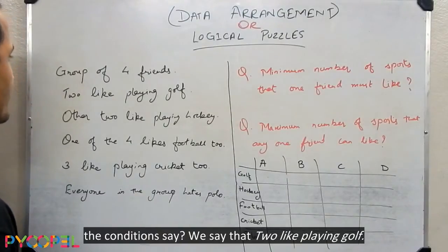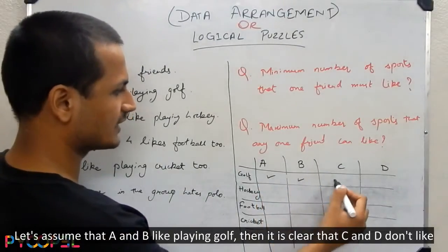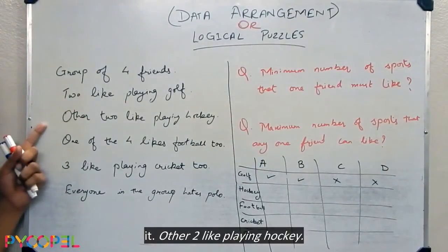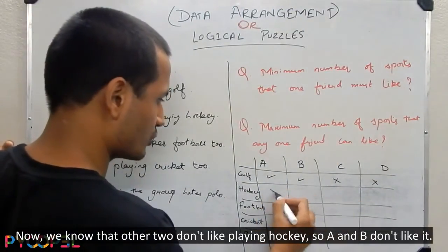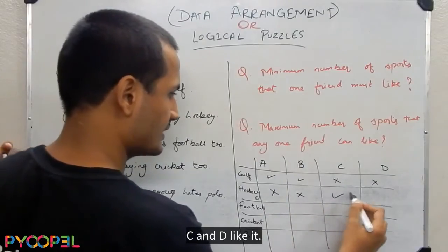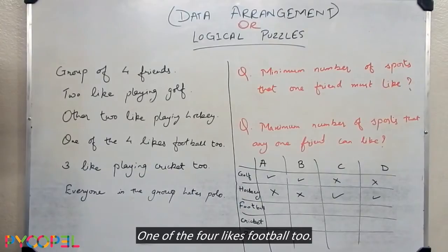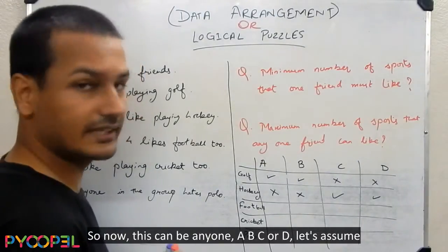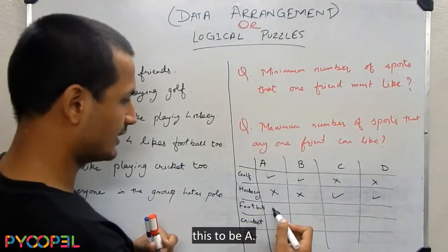What do the conditions say? Two like playing golf — let's assume A and B like playing golf, then it is clear that C and D don't like it. The other two like playing hockey, so A and B don't like it and C and D like it. One of the four likes football too — this can be any of A, B, C or D. Let's assume this to be A.